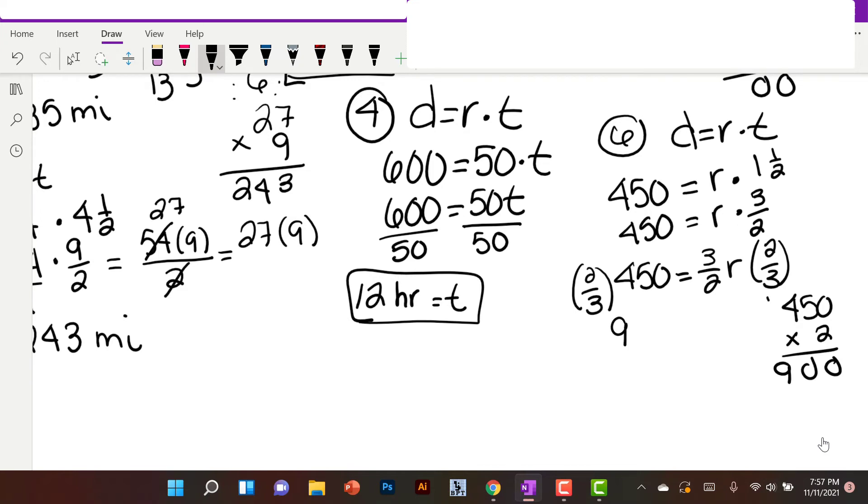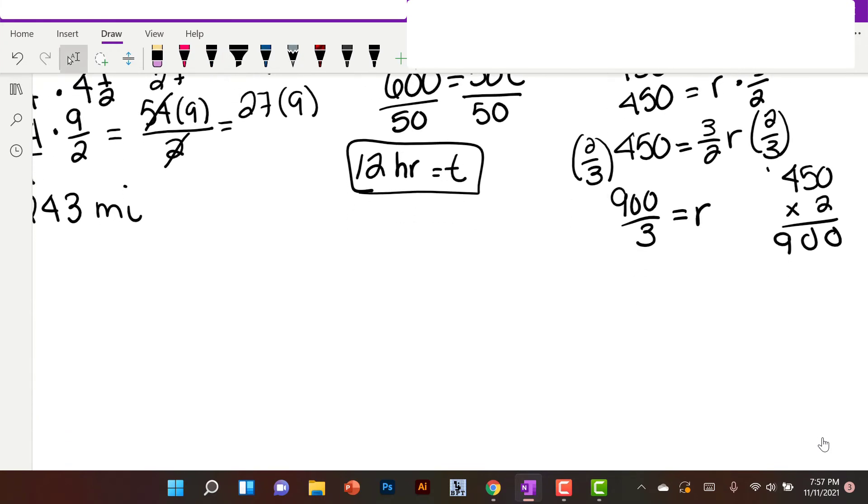We're going to have 900 over 3 equals r. Once again, when someone says how fast did you drive, are you going to say 900 over 3 miles per hour? I mean, that would be kind of funny, right? But let's simplify this. 900 divided by 3. We're going to have a 3 and two 0s. Wow. They're driving 300 miles per hour.